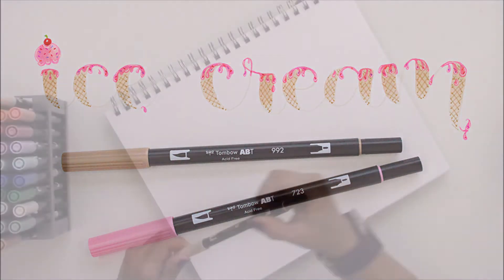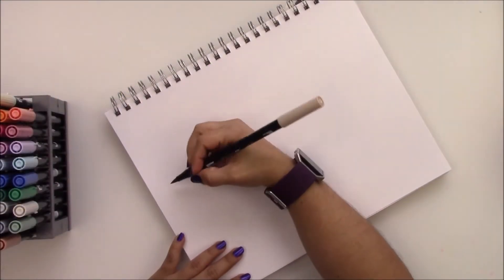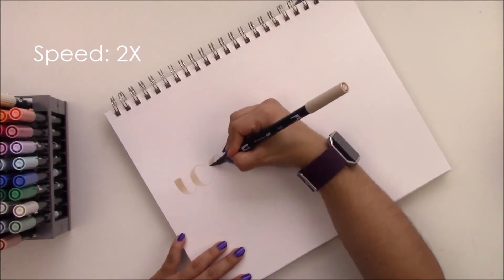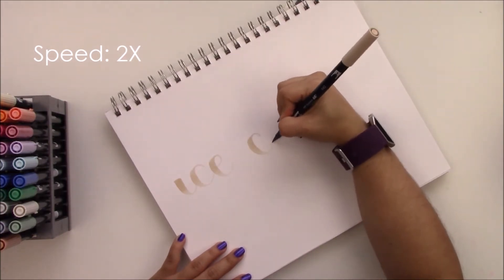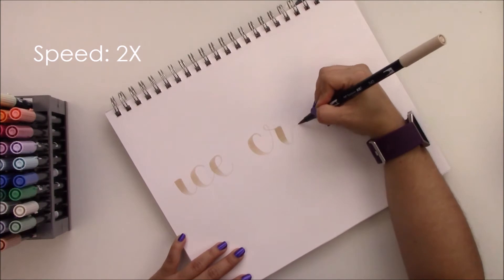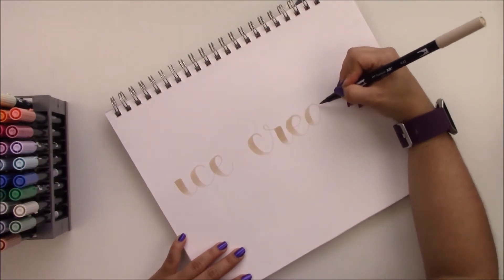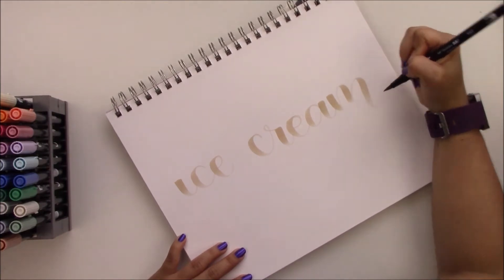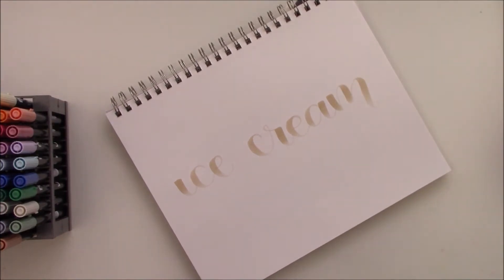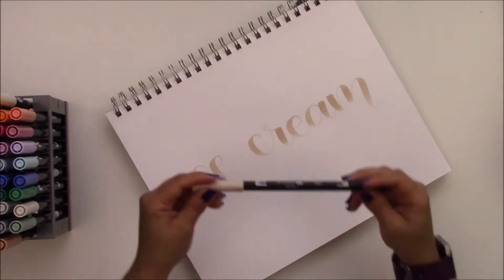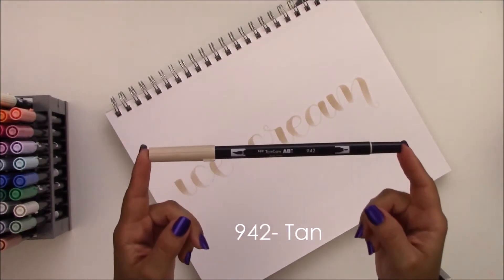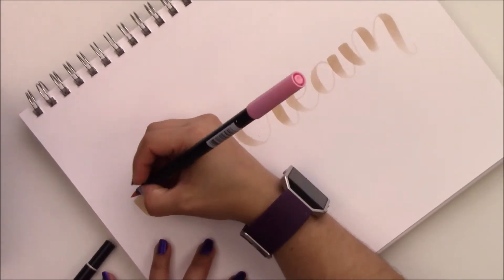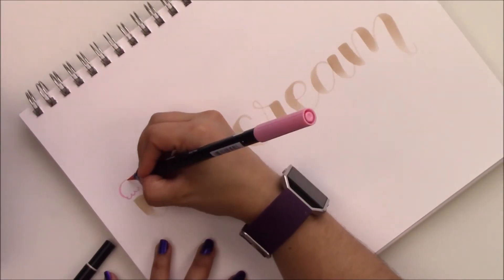Hey everyone, this is Jenny Garcia. In this video I'm going to teach you how to create some lettering using ice cream as inspiration. I always recommend to go really slow. I increased the speed of the video, but you have to put pressure when you're doing your downstrokes and go light when you're doing your upstrokes. For the base I use the 942 tan Tombow dual brush pen.